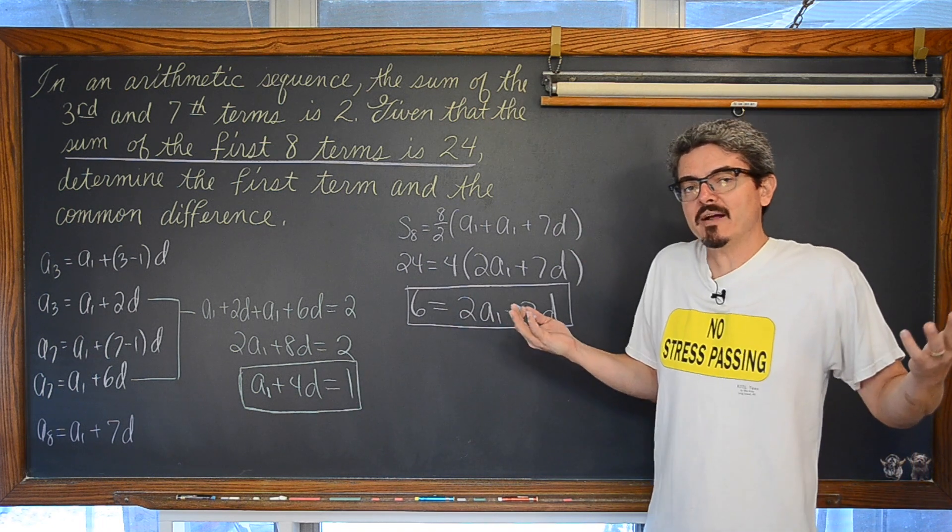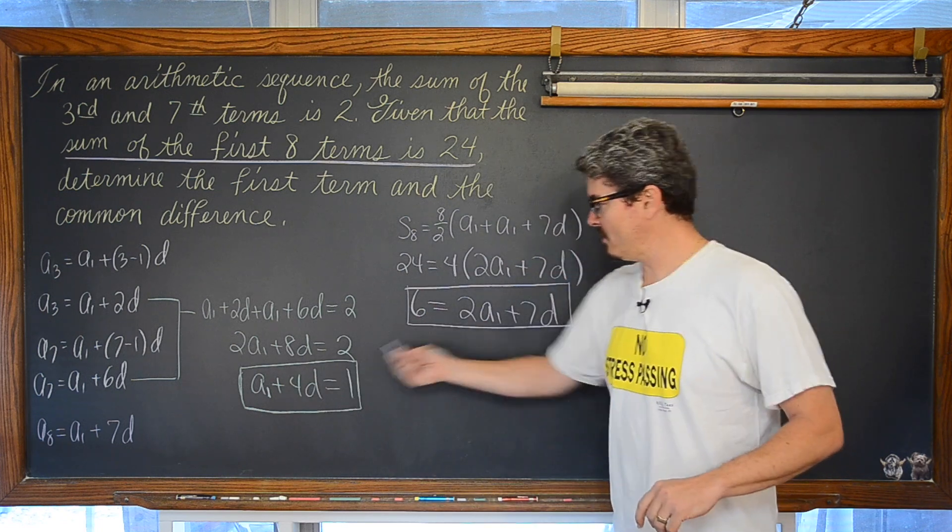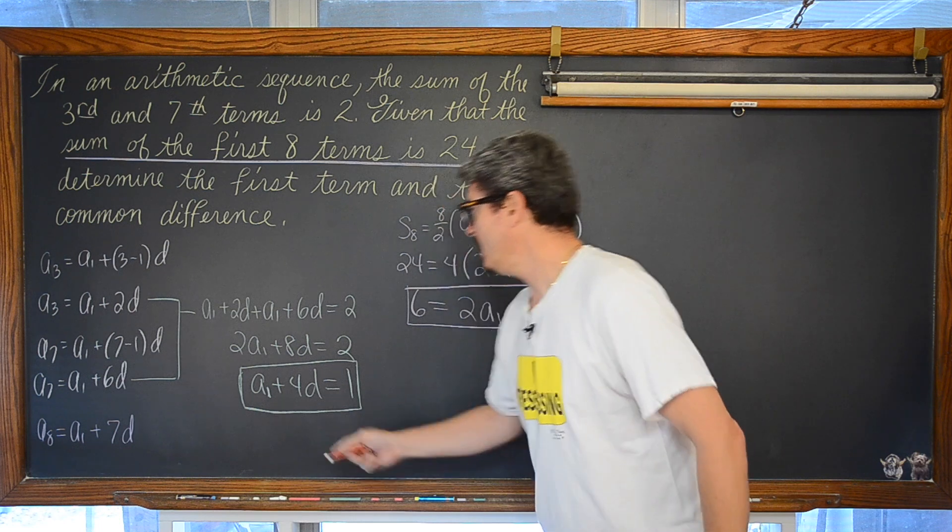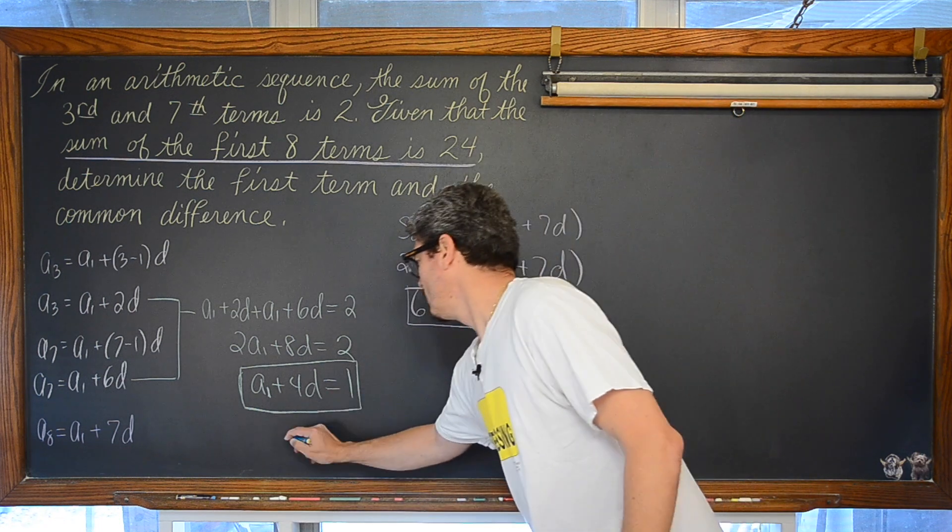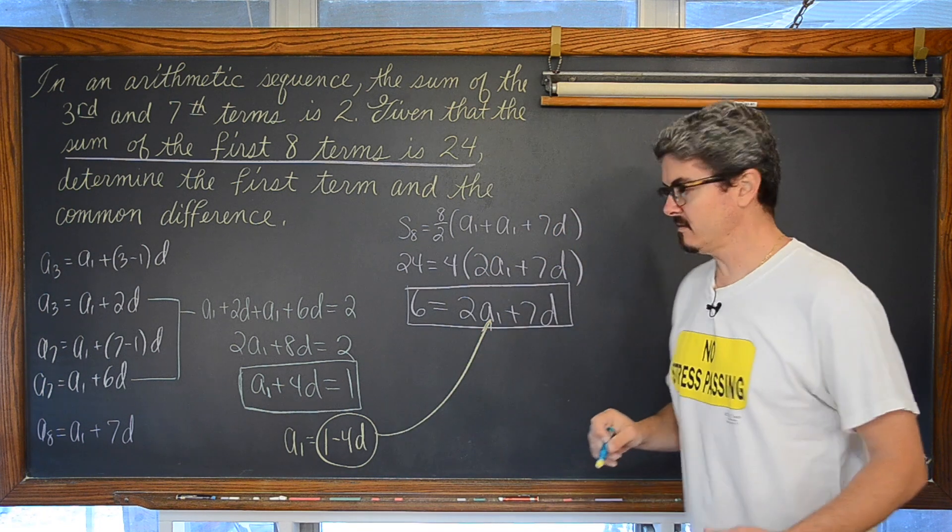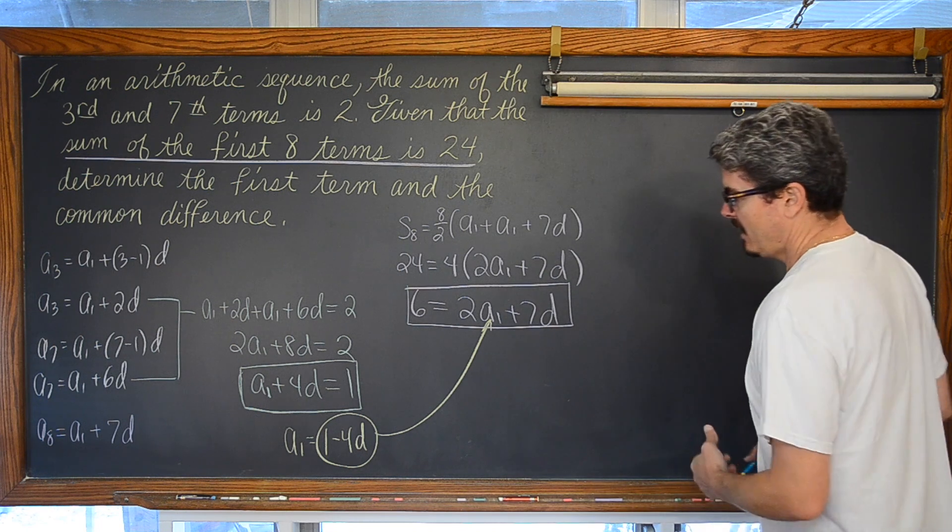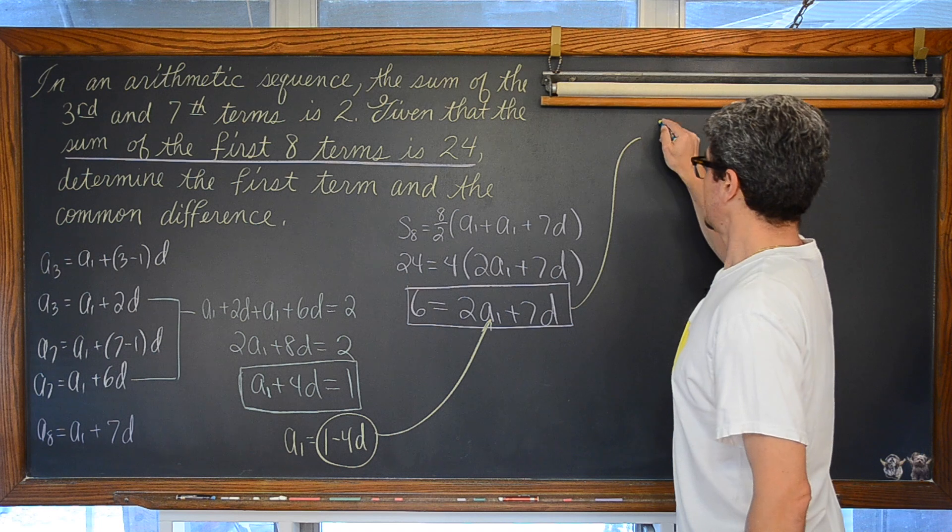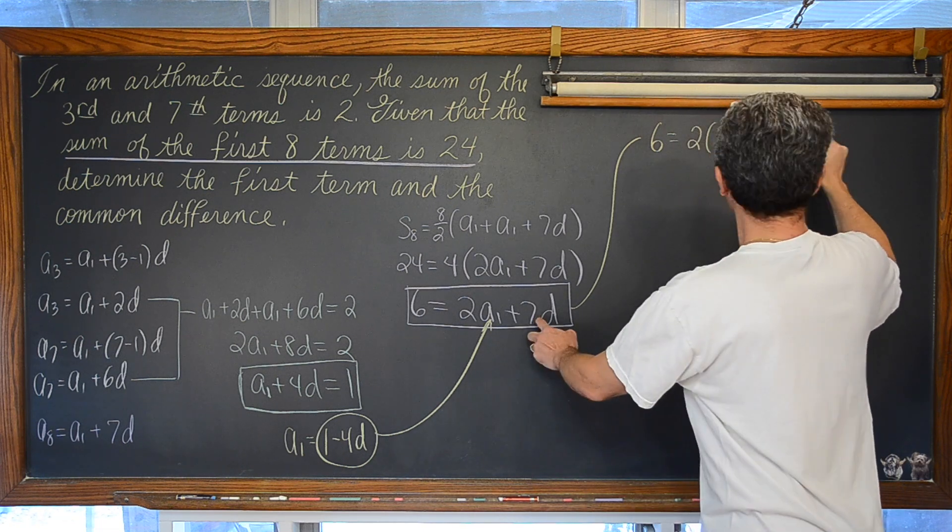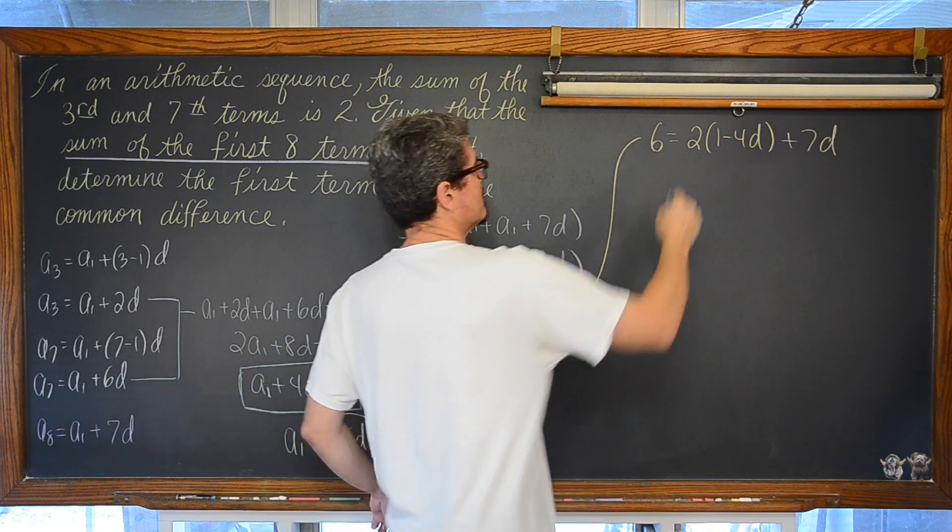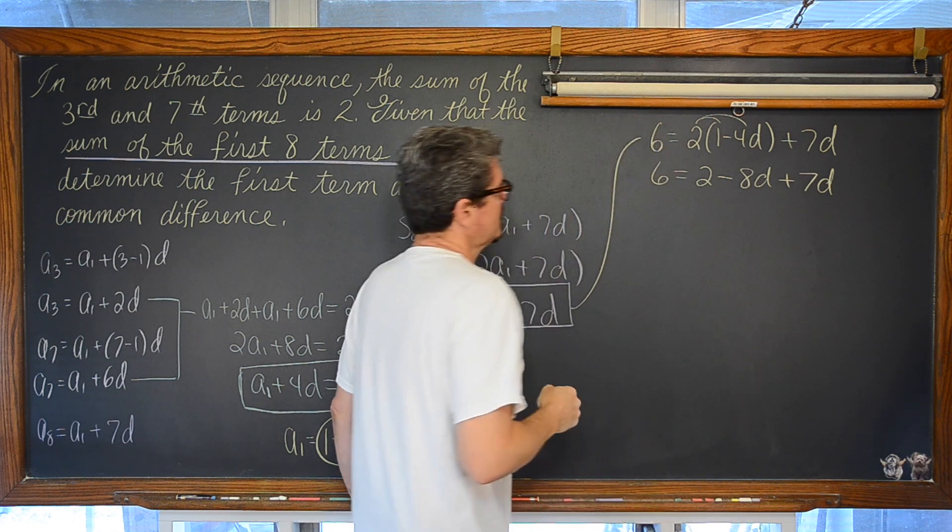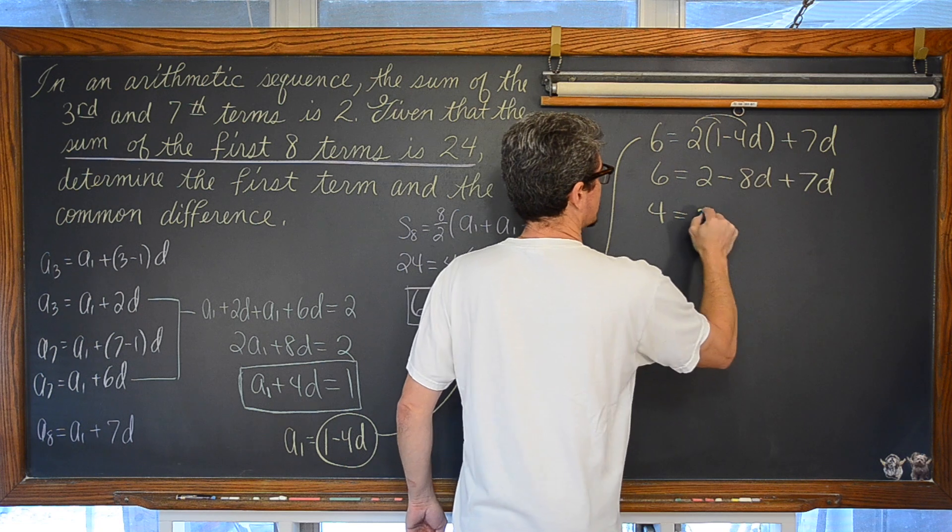This is now getting into something you learned back in Algebra 1. It is a linear system. And you solve a two variable linear system by either doing linear combination or substitution. I am going to go ahead and pick substitution because here we have a nice neat a sub 1 is equal to 1 minus 4d. Let's go ahead and plug this in to 2 a sub 1. That is going to give us that 6 is equal to 2 times a sub 1 which is 1 minus 4d plus 7d. That is going to give us, after we distribute by 2 and combine like terms, 6 is equal to 2 minus 8d plus 7d.